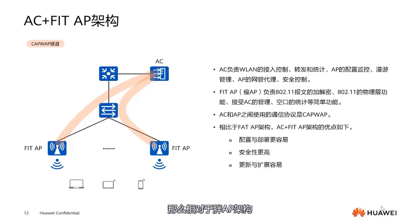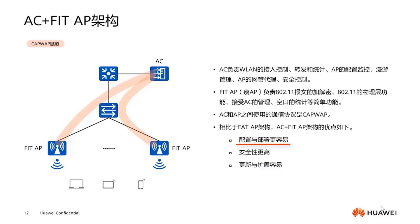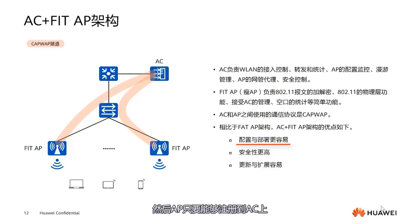Compared to the FAT-AP architecture, what are the advantages of the thin AP architecture? First, it is easier to configure and deploy. With FAT-APs, configuring 300 APs requires 300 configurations. With AC-plus thin AP architecture, configuring 300 APs only requires configurations on the AC. Then, as long as APs can register with the AC, there's no need for 300 individual setups — one setup suffices.